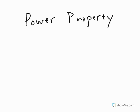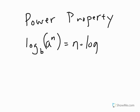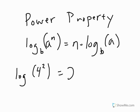Now we're going to take a look at the power property for logarithms, which says that if you have the log base b of a to the power of n, that's the same thing as n times the log base b of a. An example with numbers would be the log of 4 squared is equal to 2 times the log of 4. Just a reminder — when I write a log without a base, the base is actually 10, and we don't need to write it because that's the common base. So that's the power property.